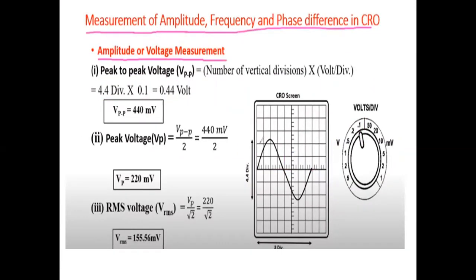First, the amplitude of voltage measurement. We can find the amplitude of voltage by using the waveform which will be shown on the CRO screen. We can measure peak-to-peak voltage — that is Vpp — the peak voltage from positive side to negative side. We find peak-to-peak voltage by multiplying the number of vertical divisions by volts per division.